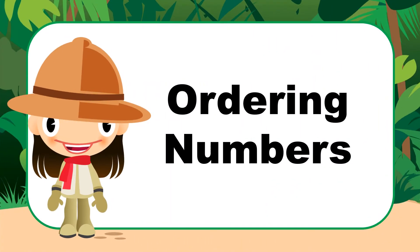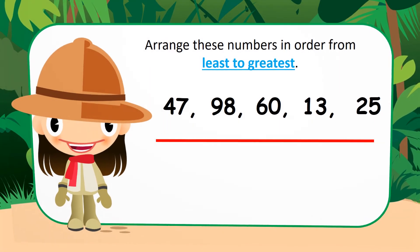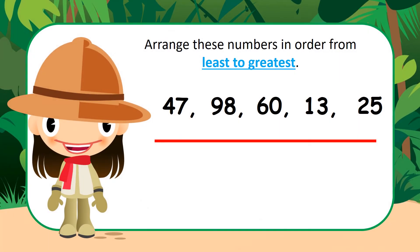Let's take a look at ordering numbers. As we learned in our drill video, we can arrange numbers in order in two ways. For this slide, we want to arrange these numbers in order from least to greatest. What does least to greatest mean? It means from the smallest number to the biggest number.